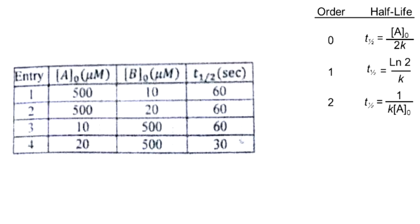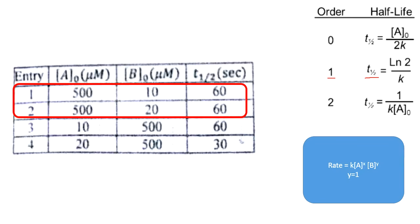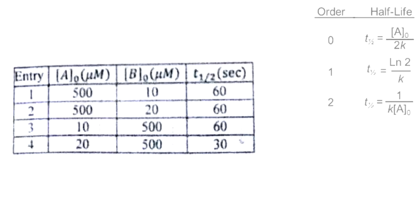Considering the first two entries in the table: the concentration of A is kept constant while B-zero is doubled. When B-zero is doubled, T-half remains unchanged — this shows that the reaction is first-order with respect to B, since it has no effect on T-half. Therefore, Y equals 1, meaning B raised to 1 in the rate equation. Next, we find the value of X.